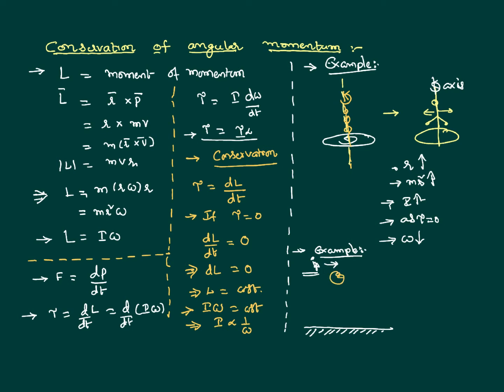He gets his legs and hands close to each other. His axis of rotation passes through the center of the body. As the body parts are close to him, his moment of inertia decreases. As there is no external torque acting on the system, as moment of inertia decreases, automatically the angular velocity increases. As his angular velocity increases, he makes more rotations in the air.